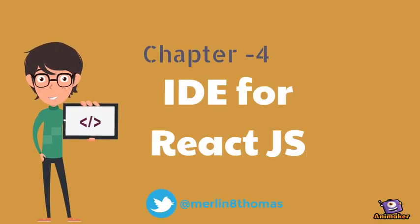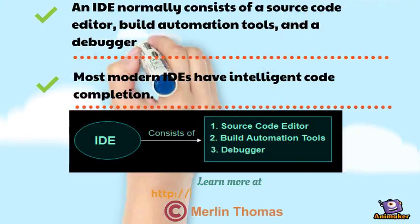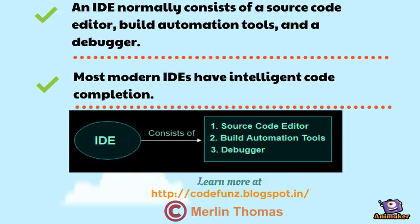Chapter 4: IDE for ReactJS. What is an IDE? IDE means Integrated Development Environment. It is a software suite that consolidates the basic tools developers need to write and test software. An IDE normally consists of a source code editor, build automation tools, and a debugger. Most modern IDEs have Intelligent Code Completion.